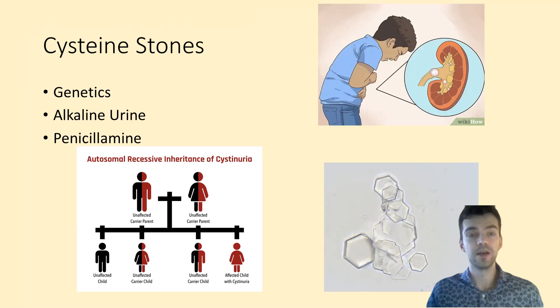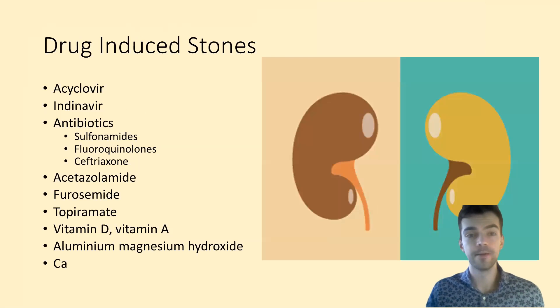Many drugs have the side effect of potentially creating a kidney stone. On this list we have acyclovir, which is used for viral infections like herpes and zoster; indinavir, used in HIV; and antibiotics like sulfonamides, fluoroquinolones, and ceftriaxone. All these drugs can precipitate and form stones if the person isn't properly hydrated, so maintaining proper hydration with these drugs is very important.